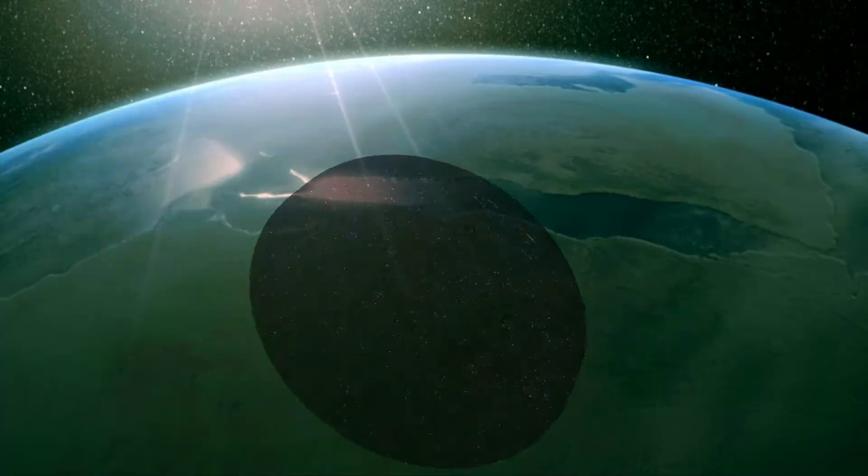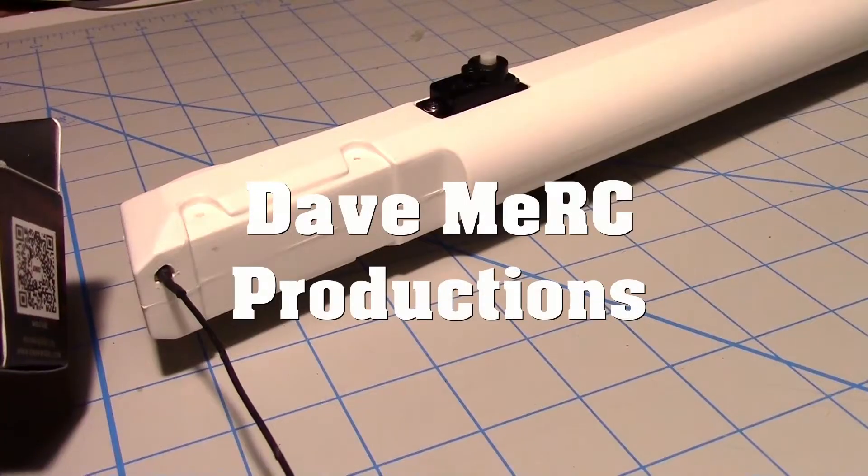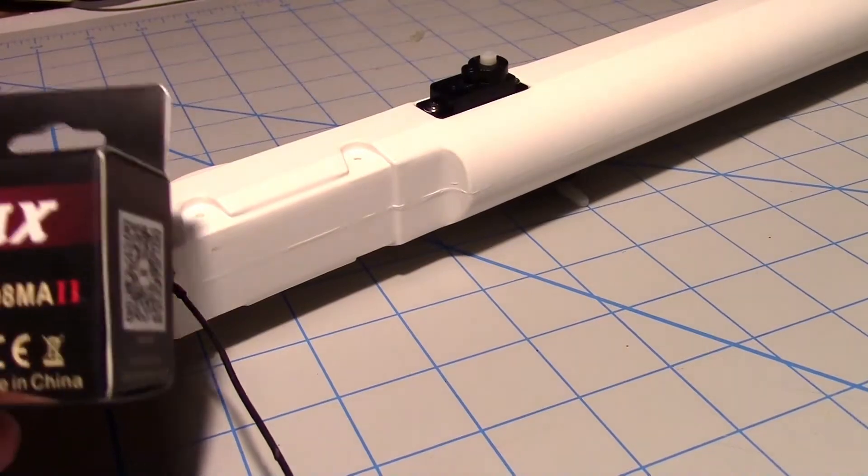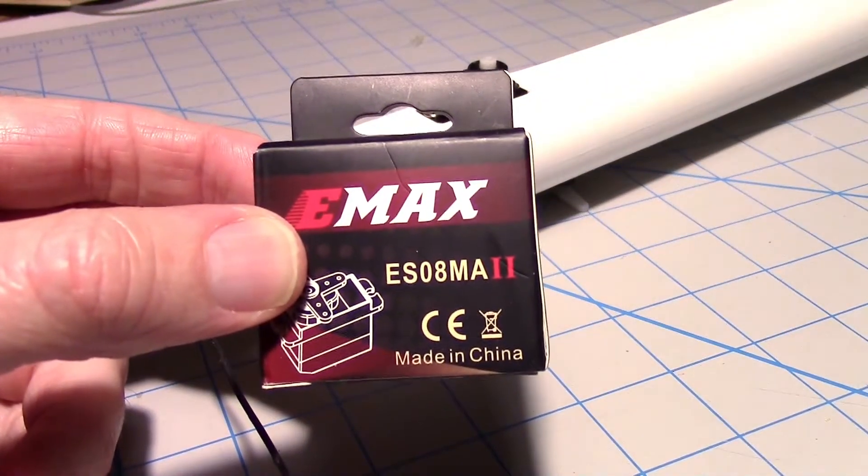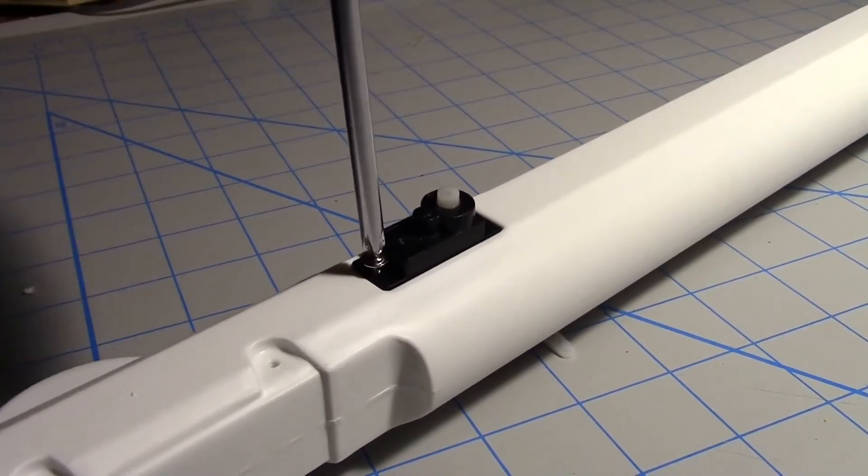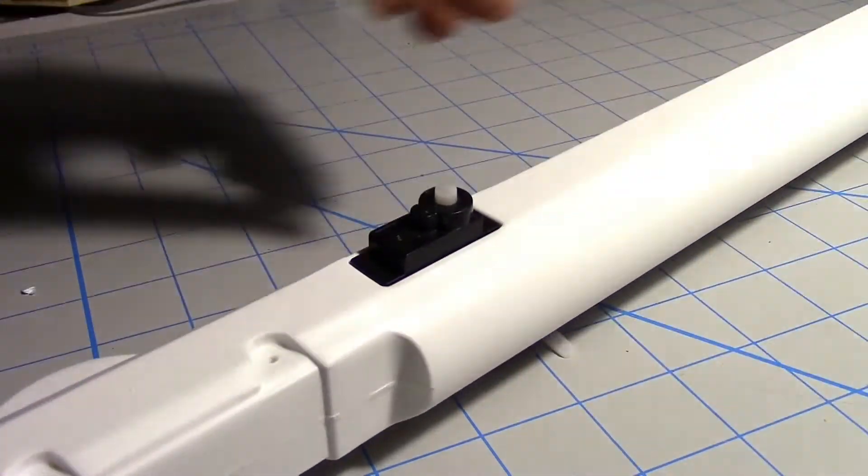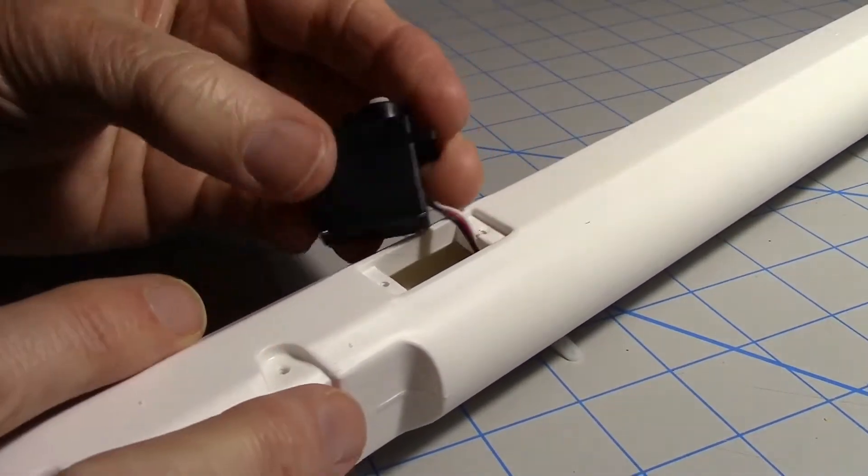First step, let's replace the tail servos with some of these Emacs ES08MA-2's. Taking out the servo screws, moving the servo out.